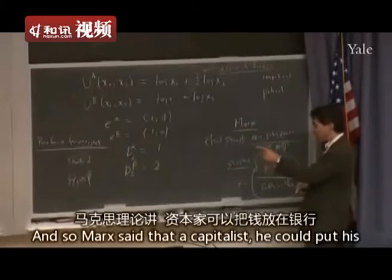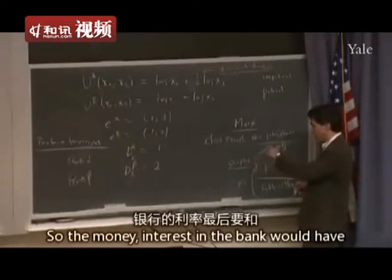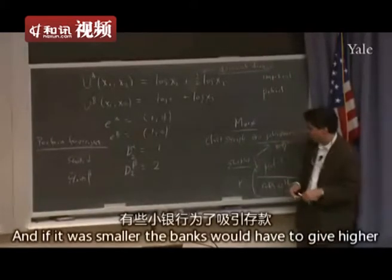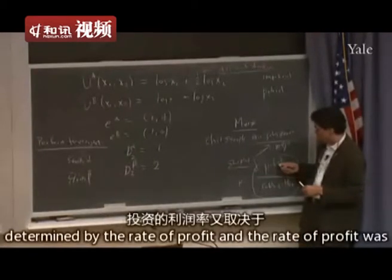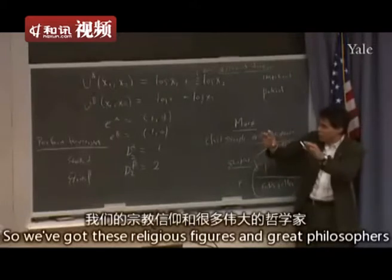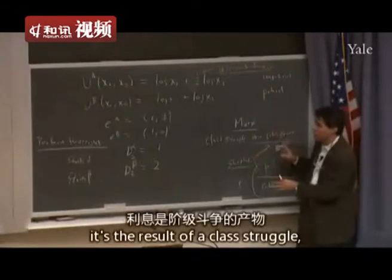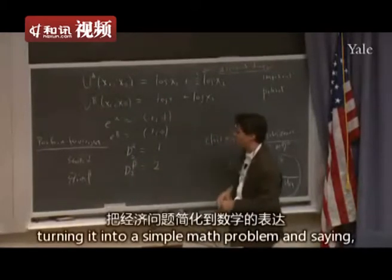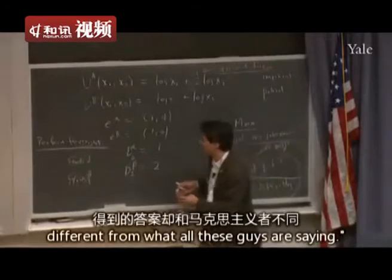Marx said a capitalist could put his money in a bank or run a farm and make profit. So interest in the bank would have to equal this rate of profit, otherwise he'd put all the money in the bank. The capitalist profit rate of interest was determined by the rate of profit, and the rate of profit was determined by the struggle between capital and labor. So we've got religious figures and great philosophers saying interest is terrible, a great philosopher-economist saying it's the result of class struggle, and now we've got Fisher turning it into a simple math problem.